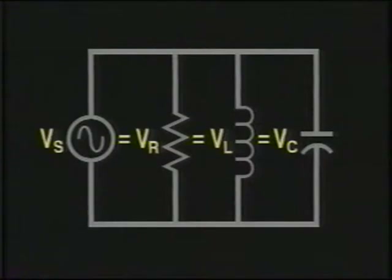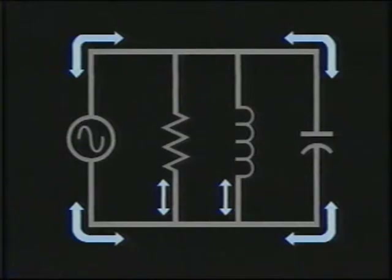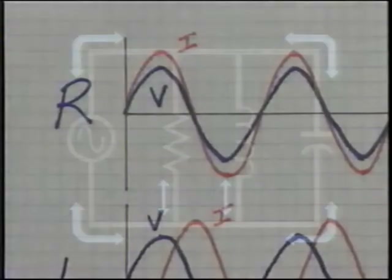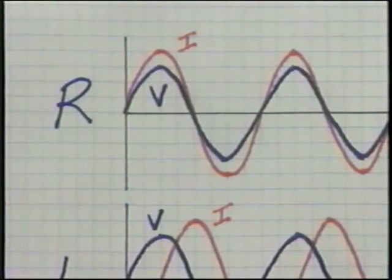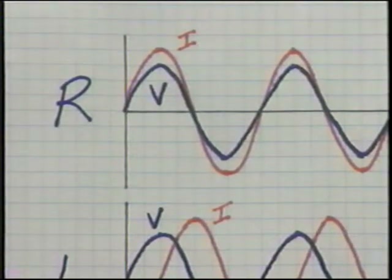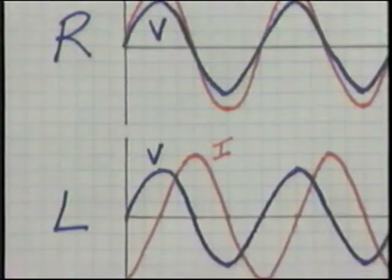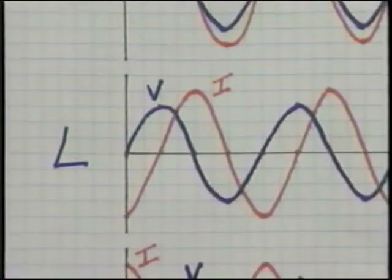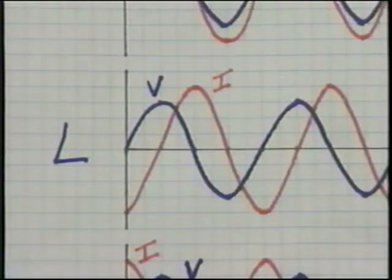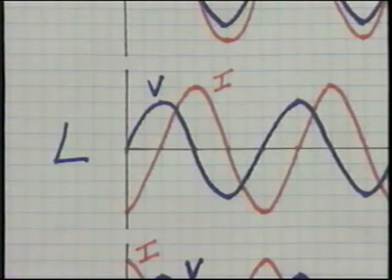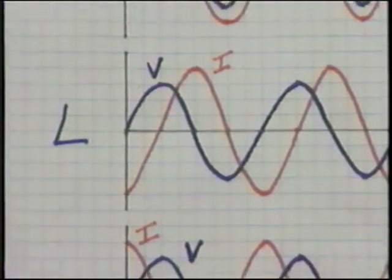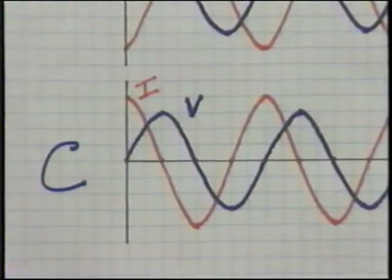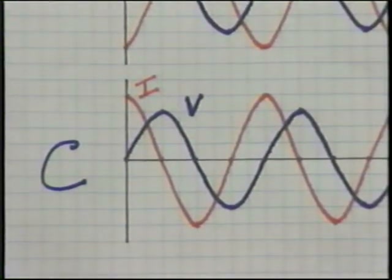In a parallel circuit, the voltage is the same across each branch. The AC voltage across a resistor is in phase with the resistive current. However, the inductive current lags the inductive voltage by 90 degrees, while the capacitive current leads the capacitive voltage by 90 degrees.